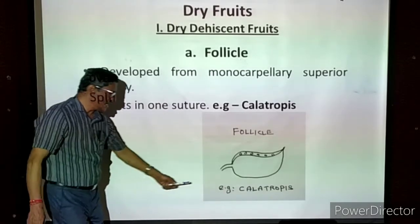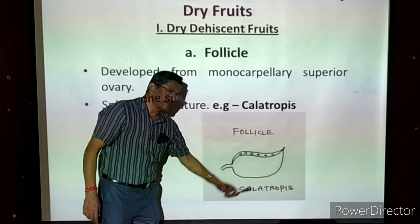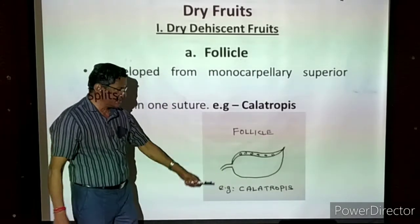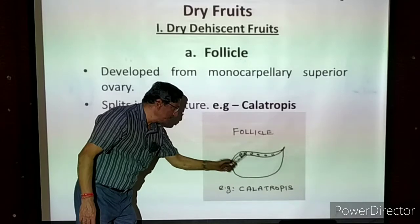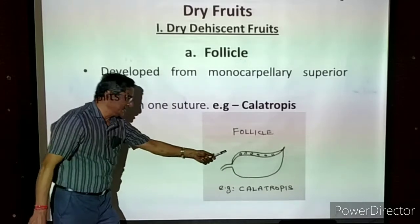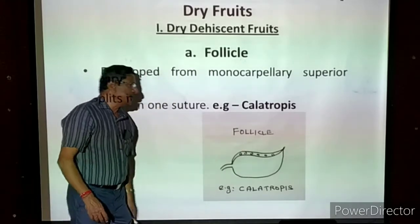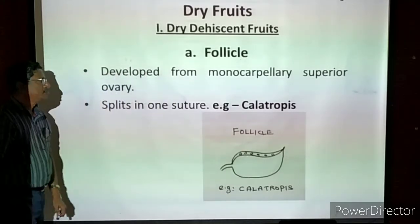Example: Calotropis. Calotropis is the name of the plant in which the fruit bursts like this. This is the exact diagram of the follicle.